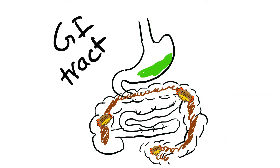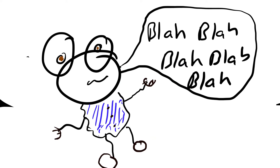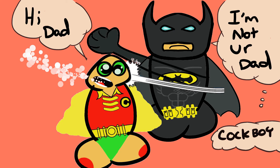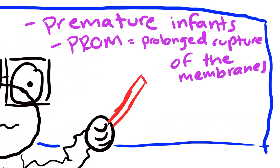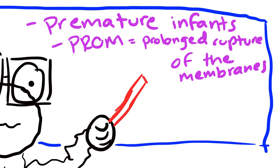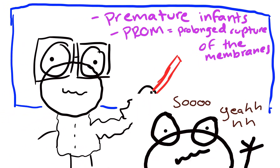GBS can also be found in the GI tract. Usually about half of GBS-positive mothers will pass the bacteria to the newborn through vaginal delivery, but only 1% of newborns will have a clinical infection. Transmission is increased in premature infants and women who have prolonged rupture of membranes, since the baby's interaction with the bacteria will be prolonged.